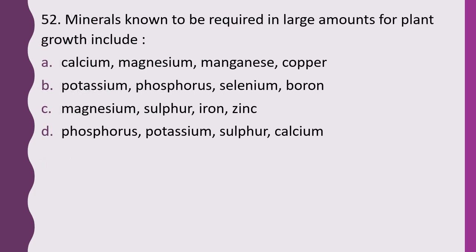Question 52. Minerals known to be required in large amounts for plant growth include which of the following options? A: calcium, magnesium, manganese; B: copper, potassium, phosphorus; C: selenium, boron, calcium, magnesium, sulfur, iron, zinc; D: phosphorus, potassium, sulfur, and calcium. The correct answer is option D — phosphorus, potassium, sulfur, and calcium.